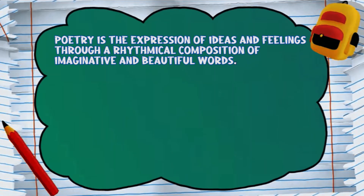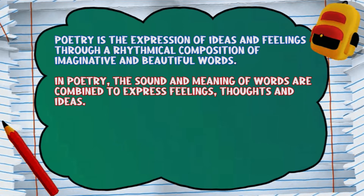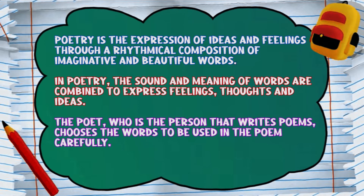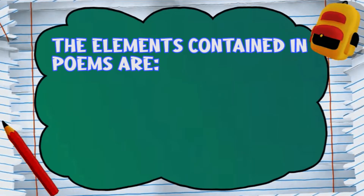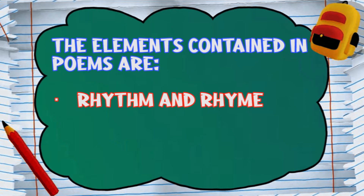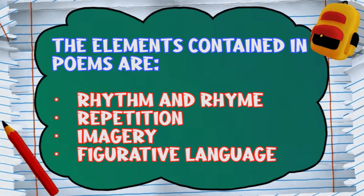When we looked at poetry, we discussed that poetry is the expression of ideas and feelings through a rhythmical composition of imaginative and beautiful words. In poetry, the sound and meaning of words are combined to express feelings, thoughts, and ideas. The poet, who is the person that writes poems, chooses the words to be used in poems carefully, and the poem is usually written in short lines. The elements contained in poems are rhythm and rhyme, repetition, imagery, and the use of figurative language.